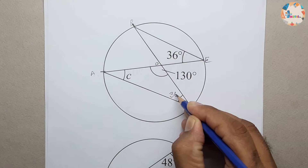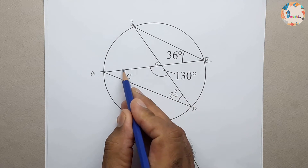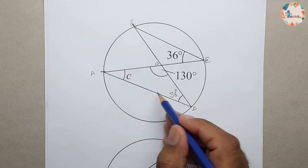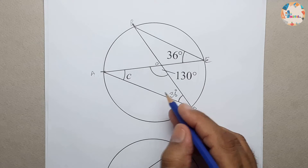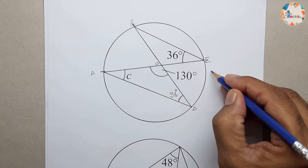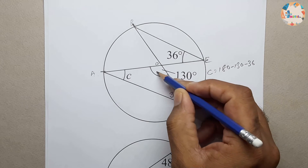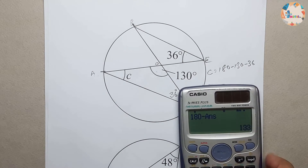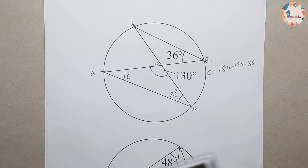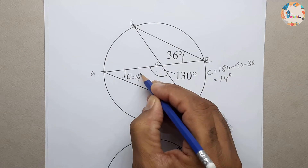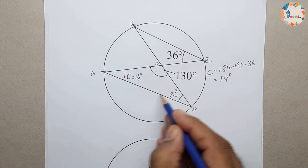If angle BEA is 36, then angle BDA is also 36. We are given 130 degrees for another angle in the triangle, and we need to find angle C. Adding all three interior angles: C plus 130 plus 36 should equal 180 degrees. So C equals 180 minus 130 minus 36, which equals 14 degrees. C is equal to 14 degrees. This is how we find this angle.